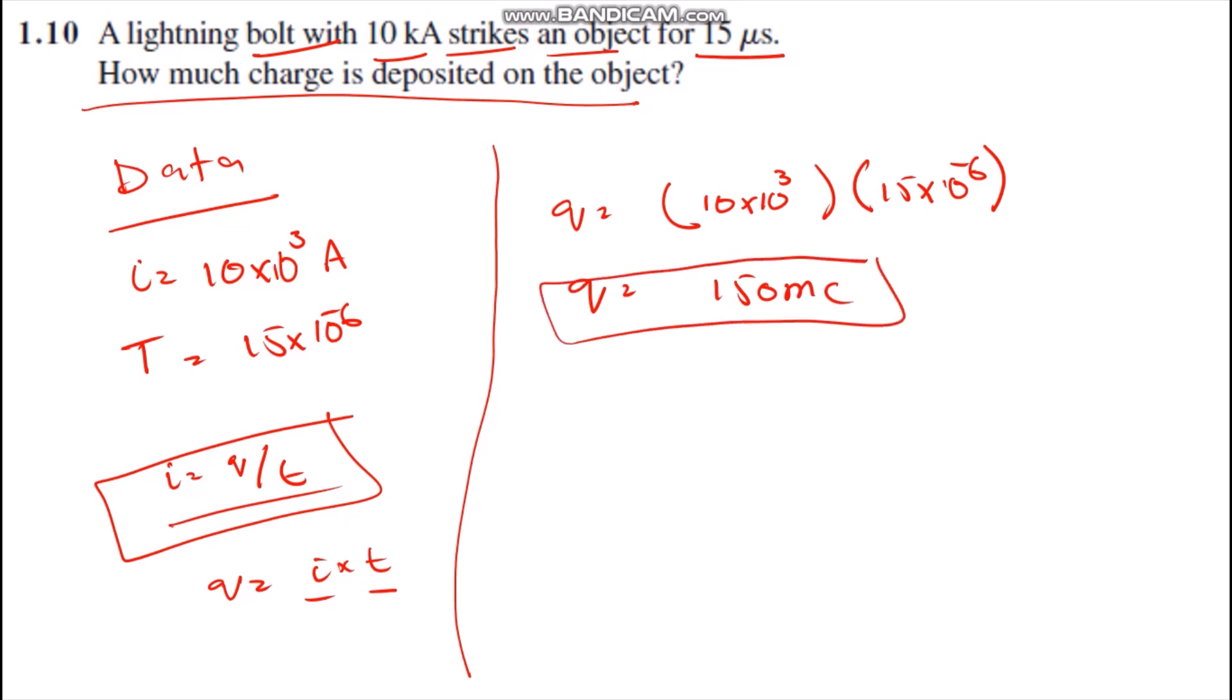This means when this particular current strikes for this particular time, 150 millicoulombs of charge will be deposited on the object. Thanks for watching.